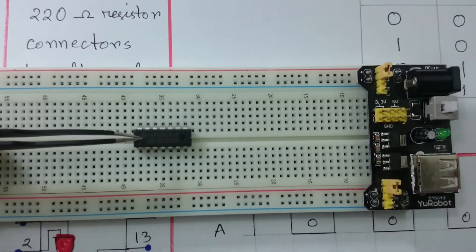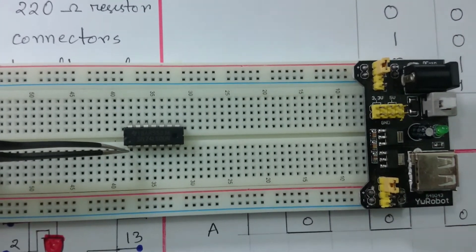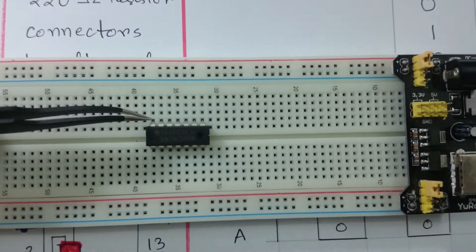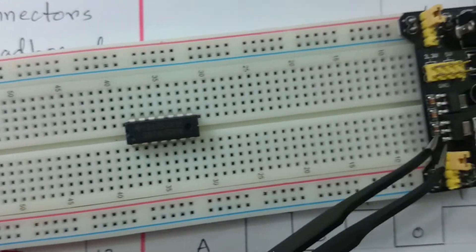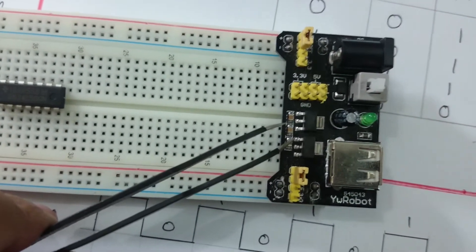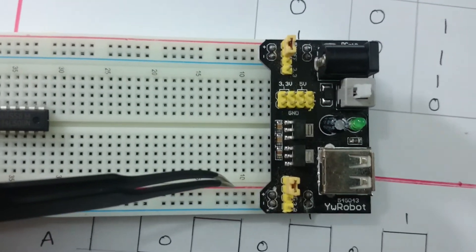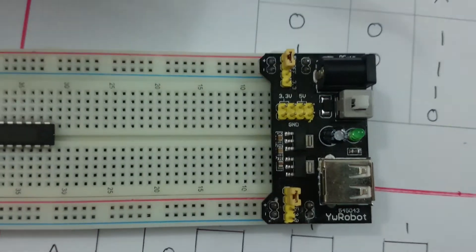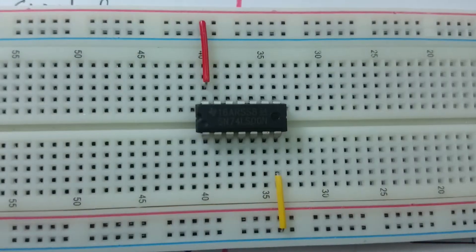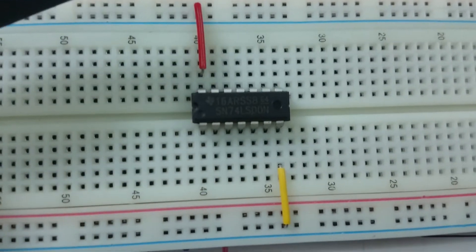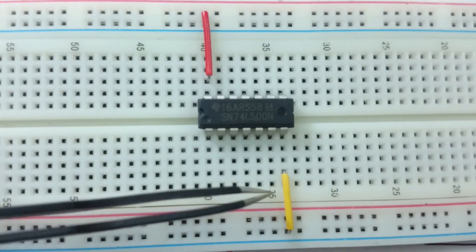I put the IC here. This is IC 7400. Here is the notch, and this is pin 1 and pin 14. Pin 7 connects to ground. I placed my 5-volt regulated power supply with positive and ground rails. I connected pin 14 to VCC positive rail and pin 7 to ground.